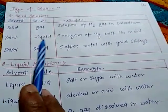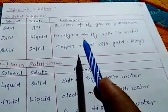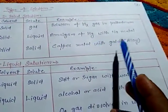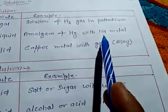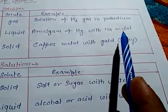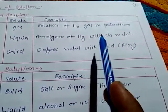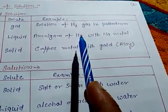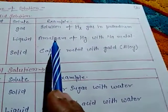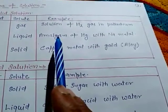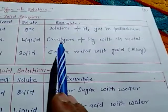When the solute is liquid and solvent is solid, amalgam is formed. For example, mercury (Hg) with sodium metal: sodium metal is soft, and when it is mixed with mercury, it forms an amalgam — a component that is moist and soft, which we call amalgam.